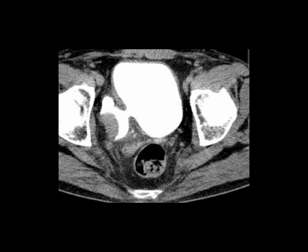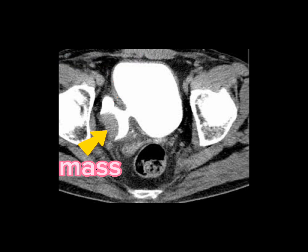This is another example of CT examination of the pelvis on post contrast study, showing a contrast-filled urinary bladder with a prominent sized diverticula around the right posterolateral aspect of its wall. There is soft tissue growth in this diverticula which is suggestive of transitional cell carcinoma.